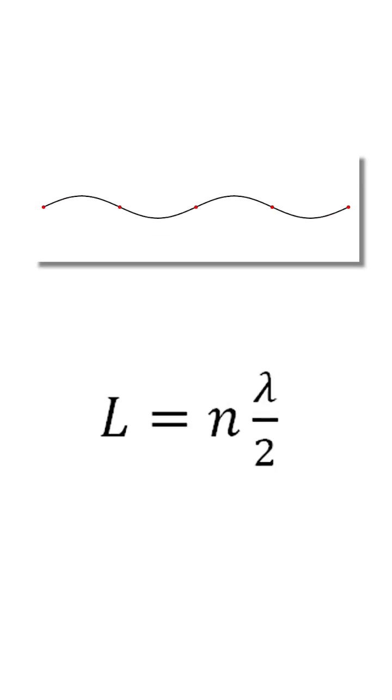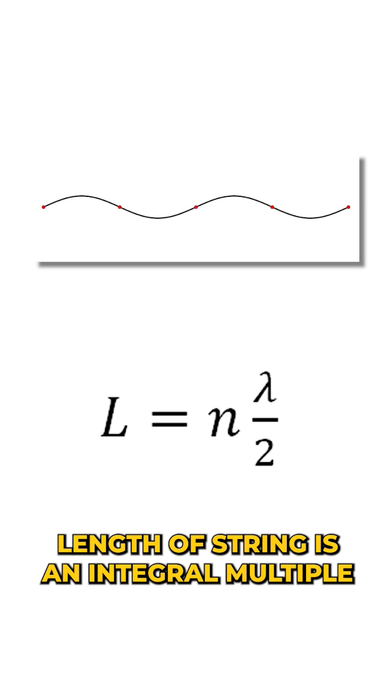Because electrons behave not just like particles, but also waves. Imagine a standing wave that oscillates with some wavelengths so that the length of the string is an integral multiple of half the wavelength.